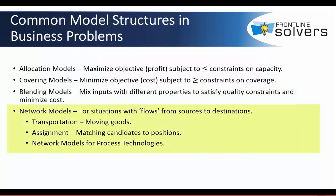Network models can be applied in situations with flows from sources to destinations, and they include transportation, assignment, or network models for process technologies. The transportation example was a network model that involved shipping of goods. These problems can also involve assigning candidates to positions, or pipeline networks with flows of oil and gas, or communication networks with flows of digital signals.